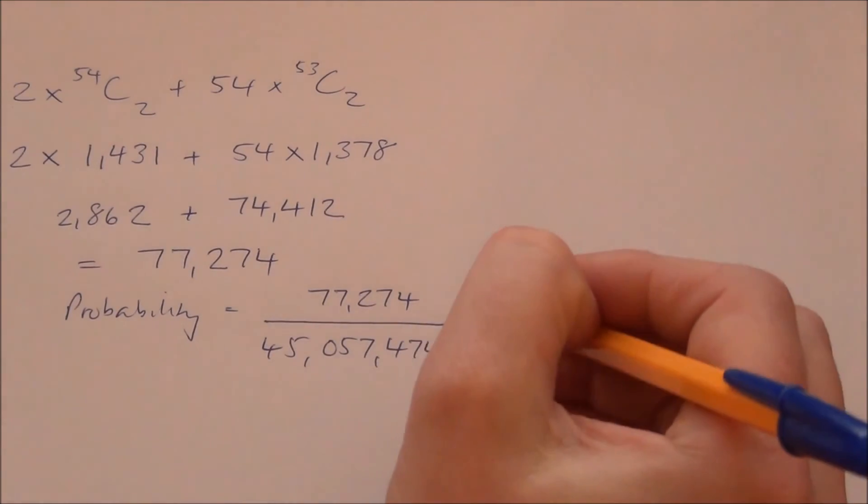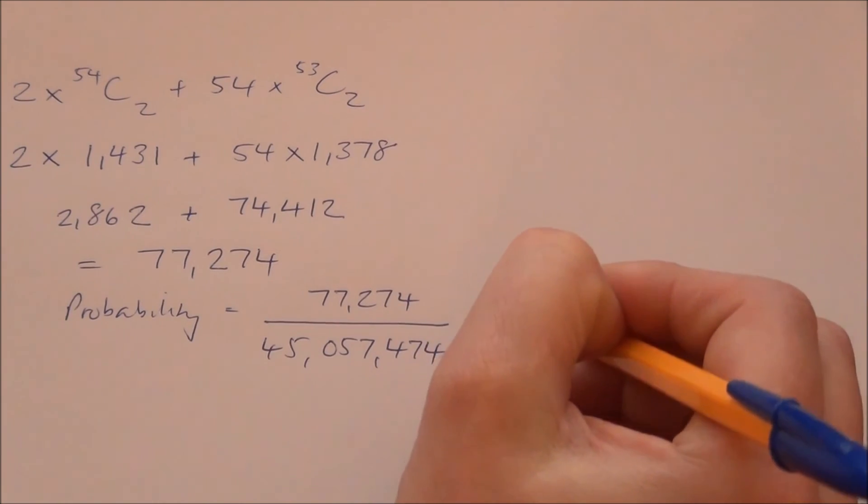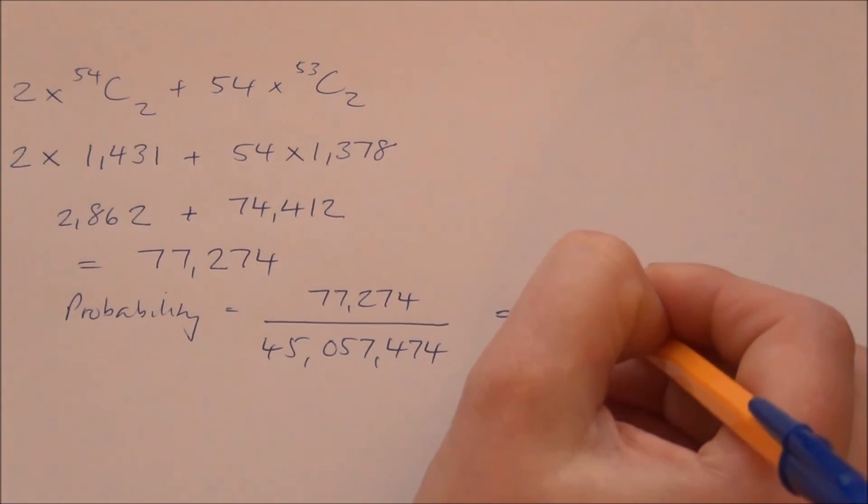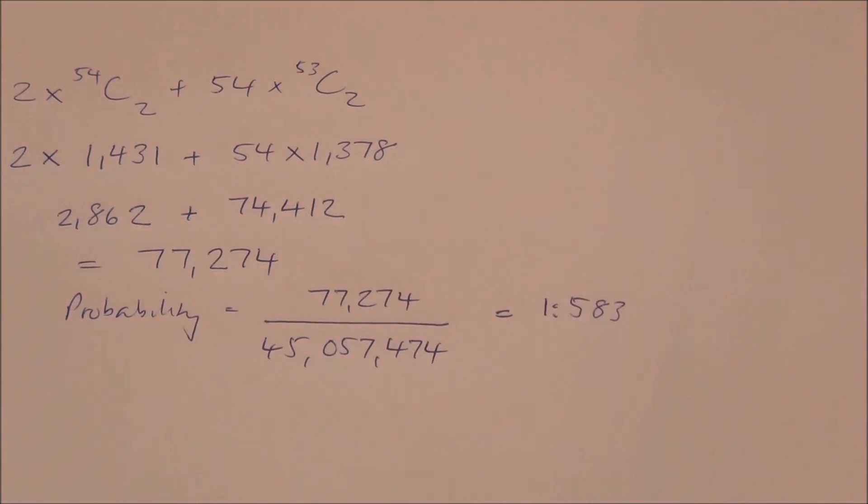And that gives us approximately 1 in 583. So, there's about a 1 in 583 chance of four consecutive numbers from a single draw.